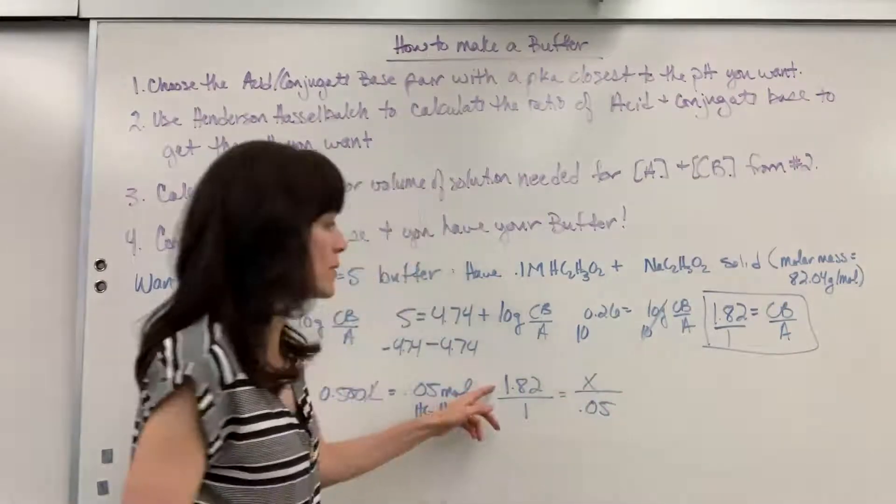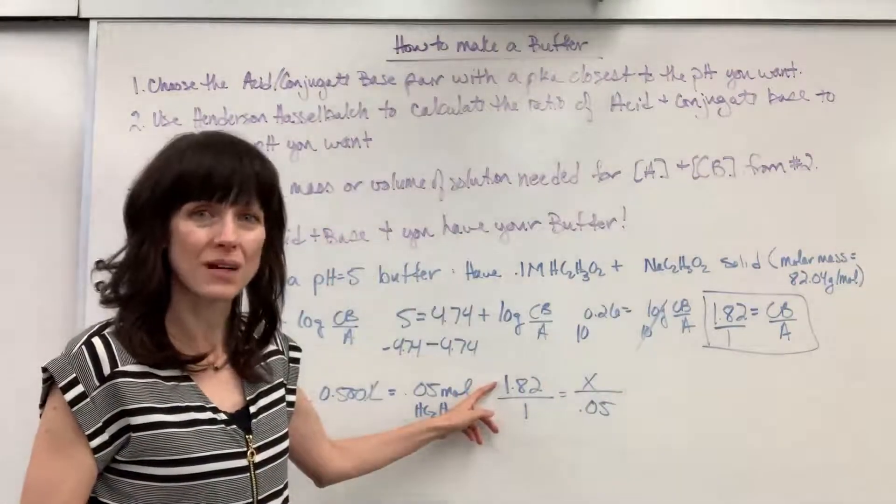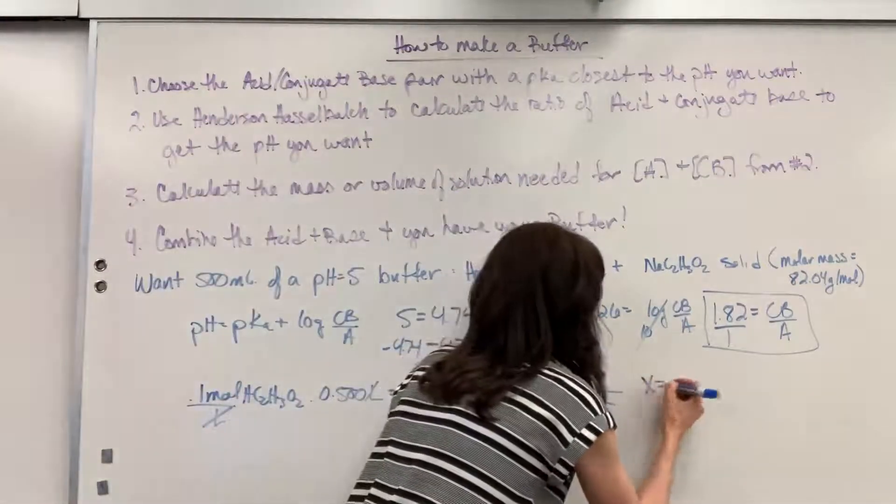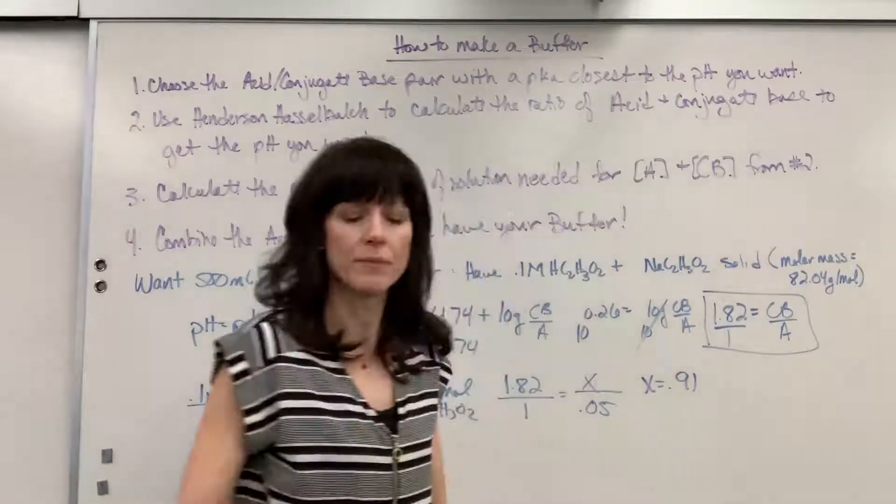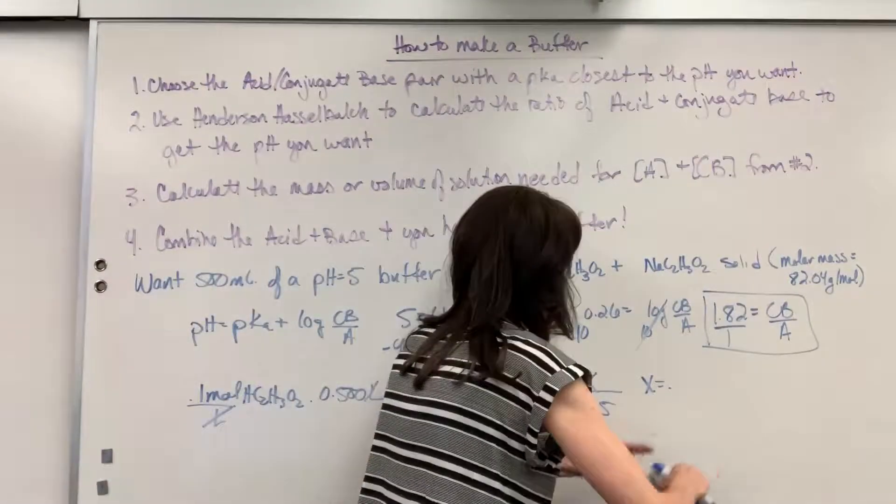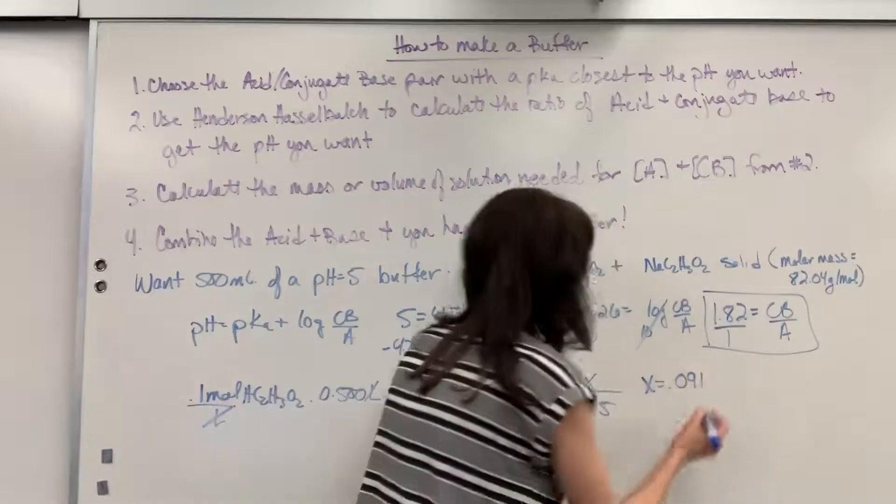how many moles of the base, that conjugate base, do I need? Just do a cross multiply, and x equals 0.91. Let me make sure I did that right. 0.091. Yeah, that seemed kind of large to me. Sorry. 0.091.